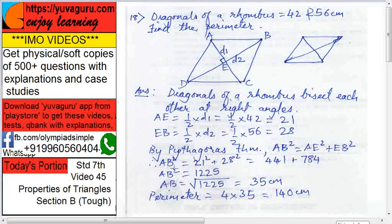Now 1225 is AB square equals 1225, but we want only AB because we want only length. So AB equals this—it becomes square root, square root of 1225.